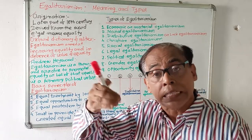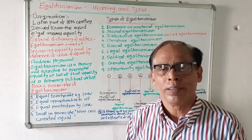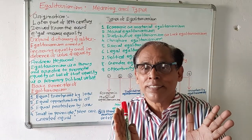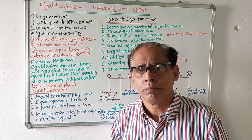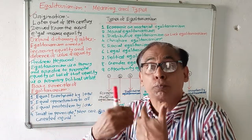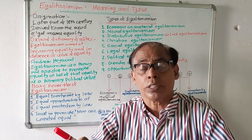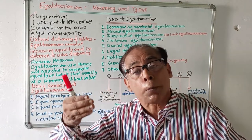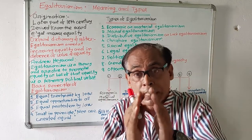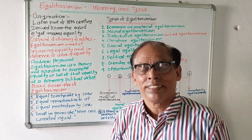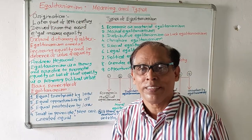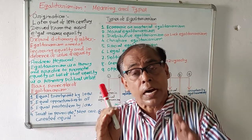We will discuss mainly the meaning of egalitarianism and its types or categories. In the subject of political science, many ideologies are found, but some ideologies are losing popularity while some are gaining popularity. Among those gaining popularity is egalitarianism. Day by day the popularity of egalitarianism is increasing. Egalitarianism originated in the later part of the 18th century, and John Locke was considered the father of egalitarianism.